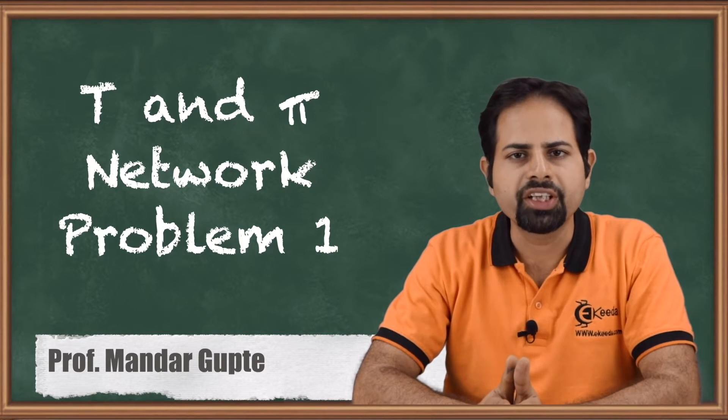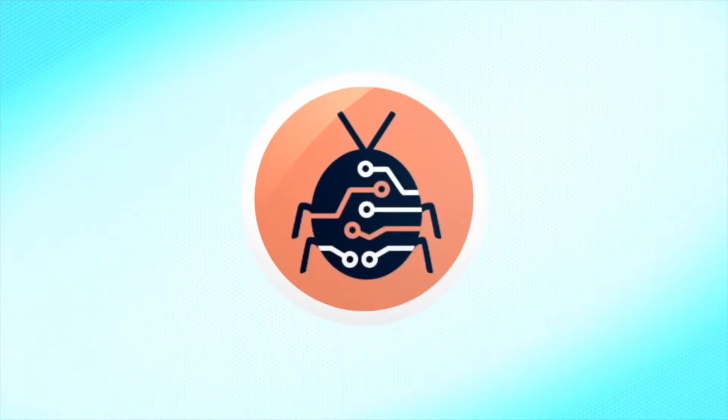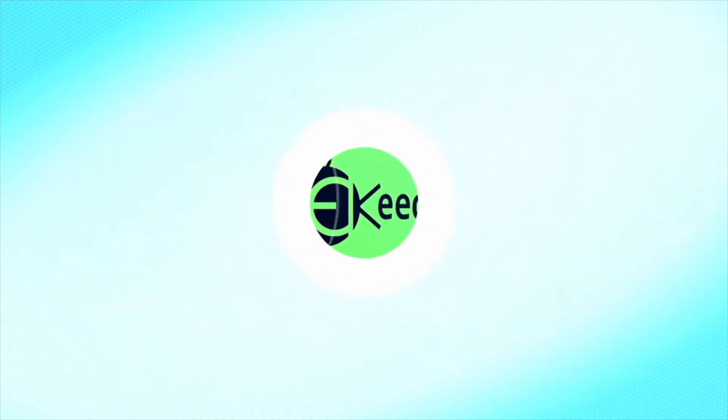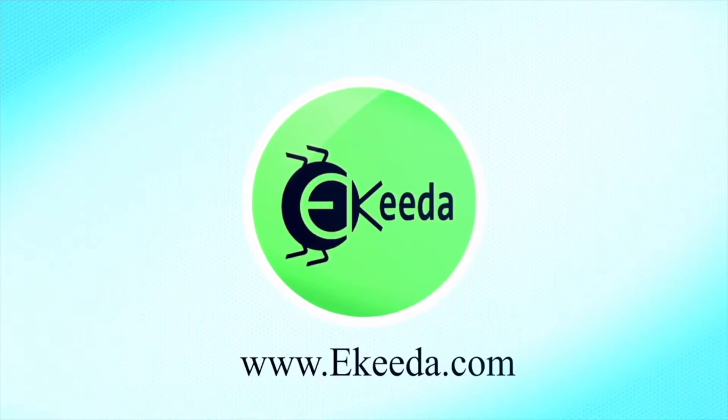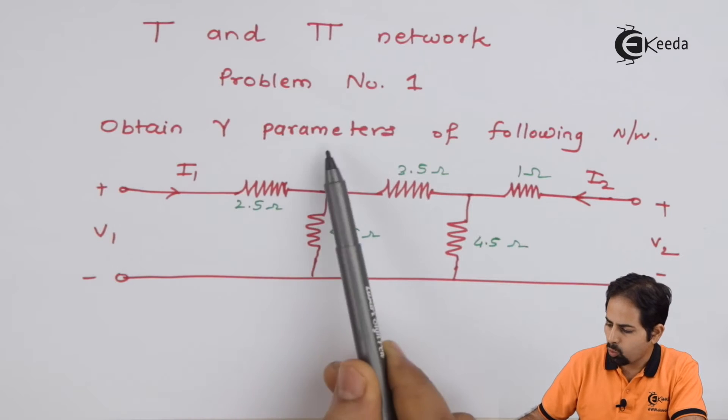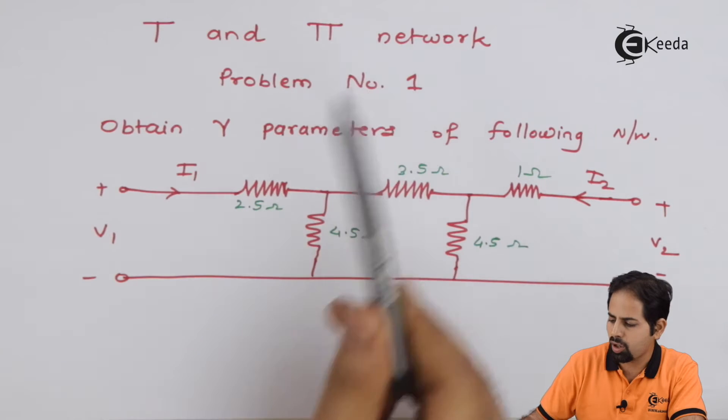Today we will see problem number 1 on T and Pi networks. You can see here, the question is obtain Y parameters for the following network. Now in this network, we have to solve this by using T or Pi network.